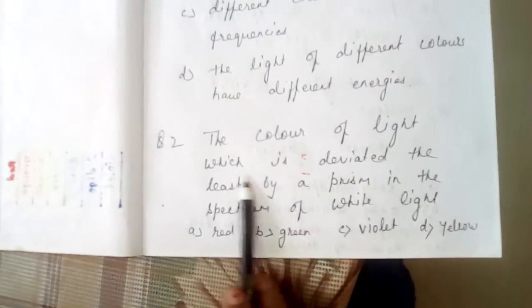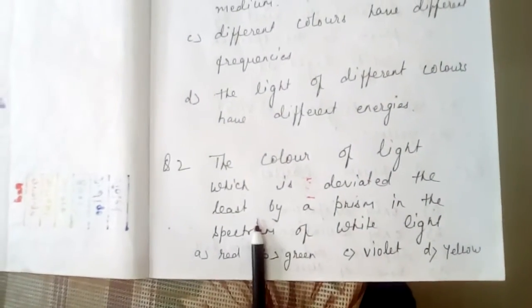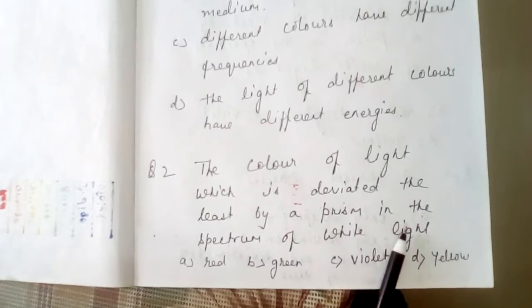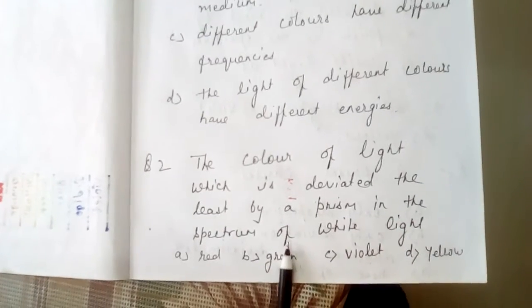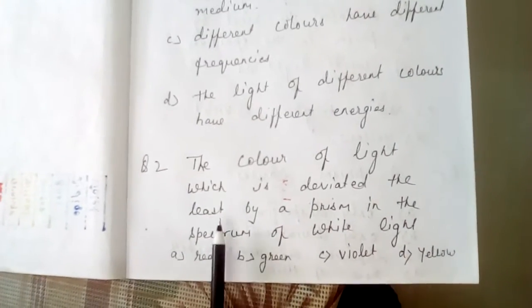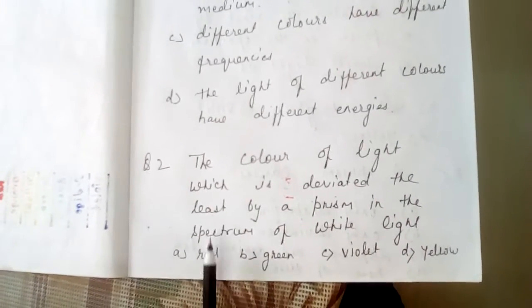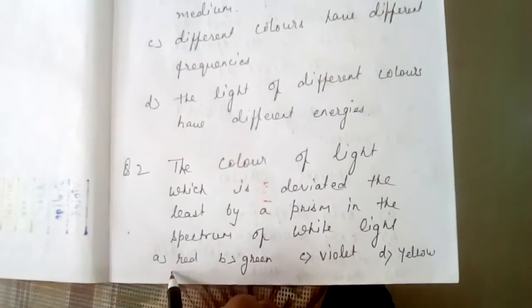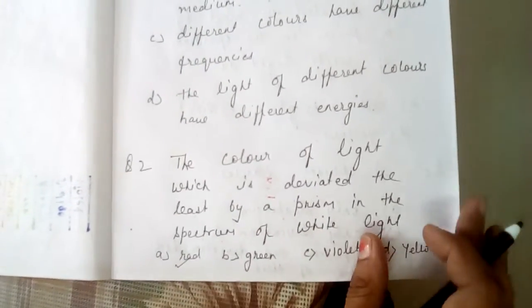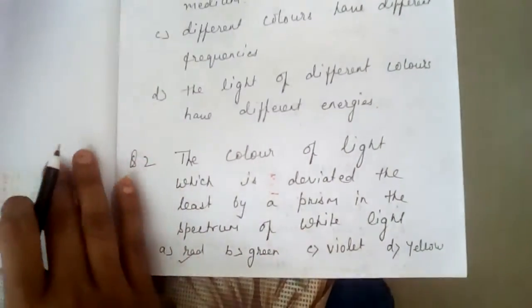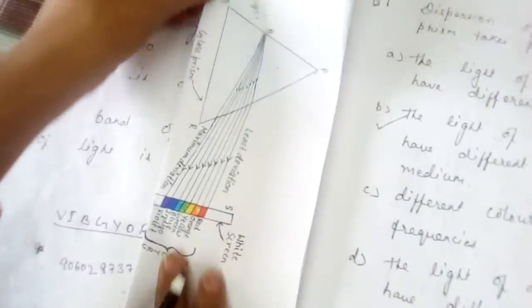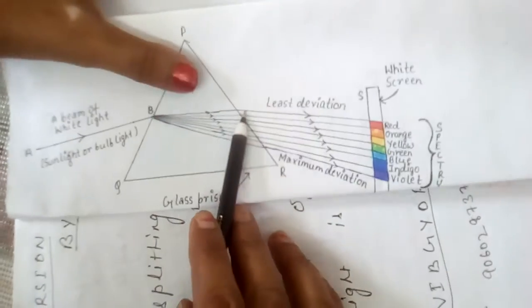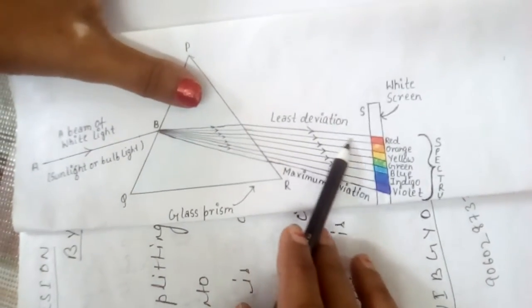Second question: the color of light which is deviated the least by a prism in the spectrum of white light. The answer is red color — it deviates the least. As I have shown in the figure, here you can see red color deviates least.